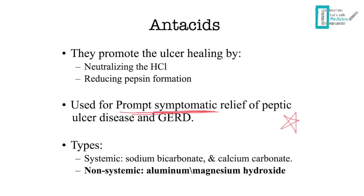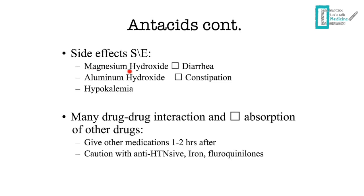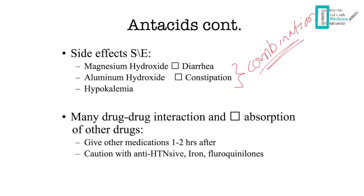There are two main types of antacids: systemic and non-systemic. We focus mainly on the non-systemic type — aluminum and magnesium hydroxide — used for peptic ulcer disease. Magnesium hydroxide causes diarrhea and aluminum hydroxide causes constipation, so they are used in combination to counteract each other's effects. All antacids can cause hypokalemia, so caution is needed.